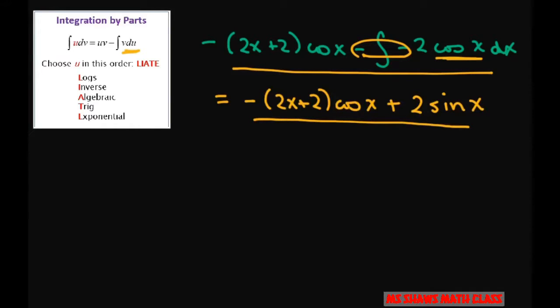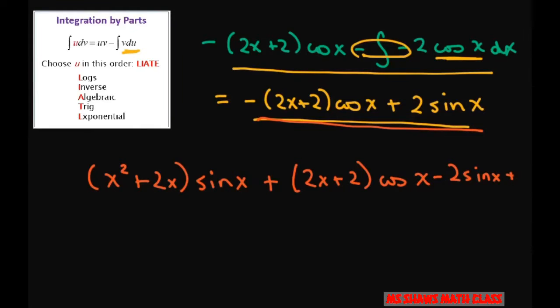Now let's write the final equation. The final answer is the first part we got, which was (x squared plus 2x) sine x, plus all of this. That's negative (2x plus 2) cosine x plus 2 sine x plus C.